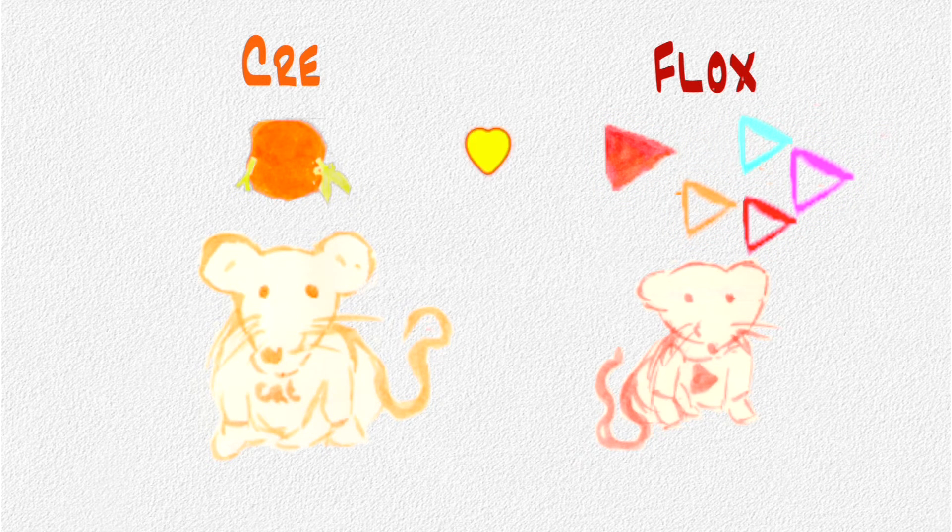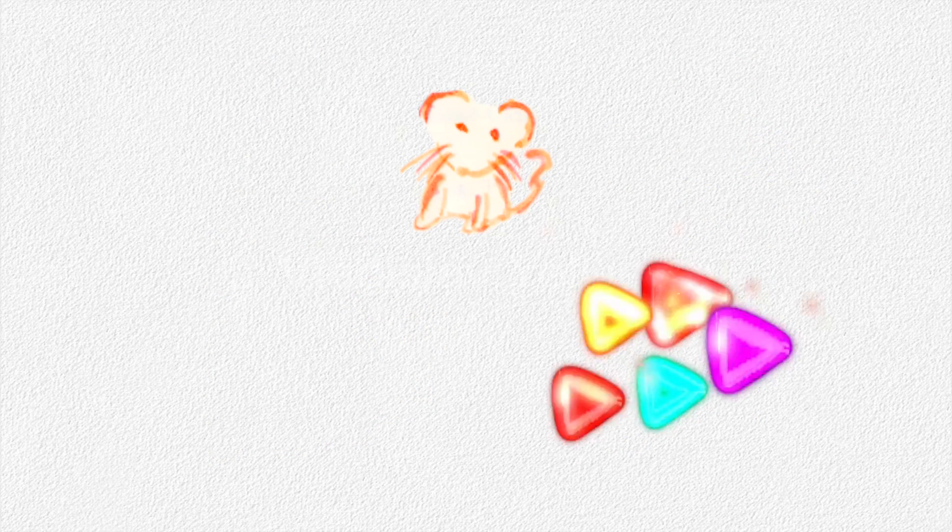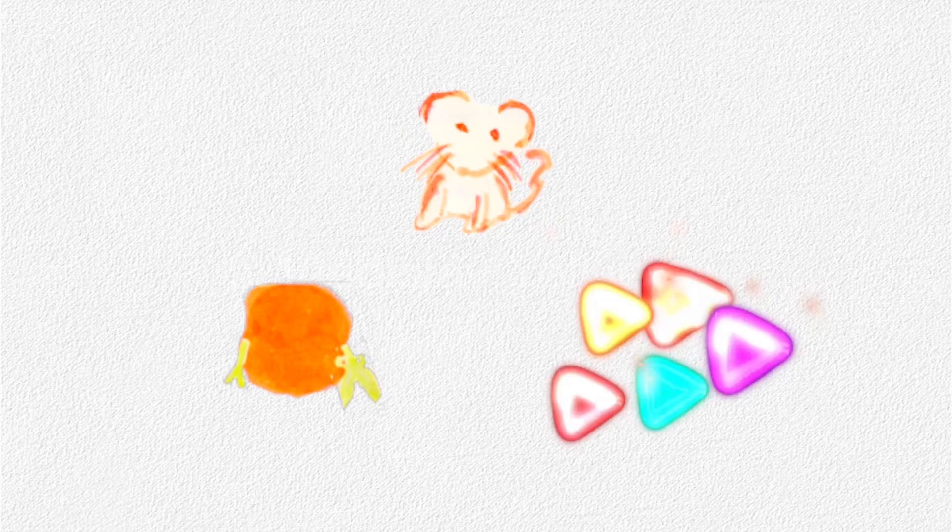When a Cre and a Phlox mouse are bred together, the resulting offspring has both the ability to signal the sections of genes to be changed, as well as the ability to change these sections of genes.